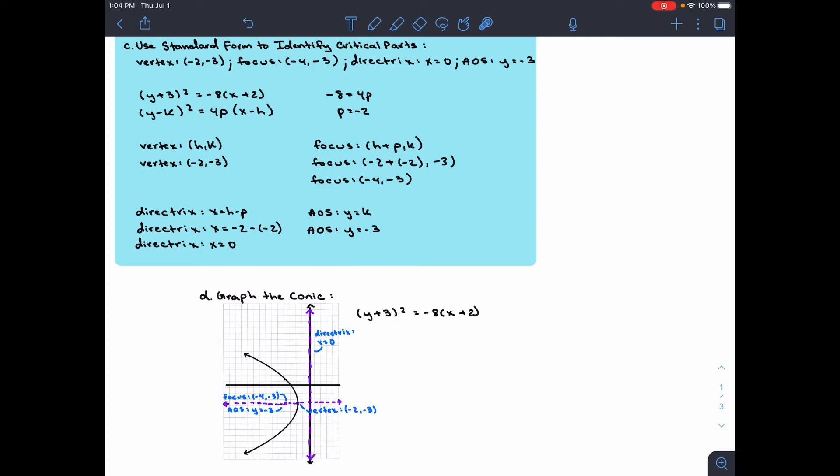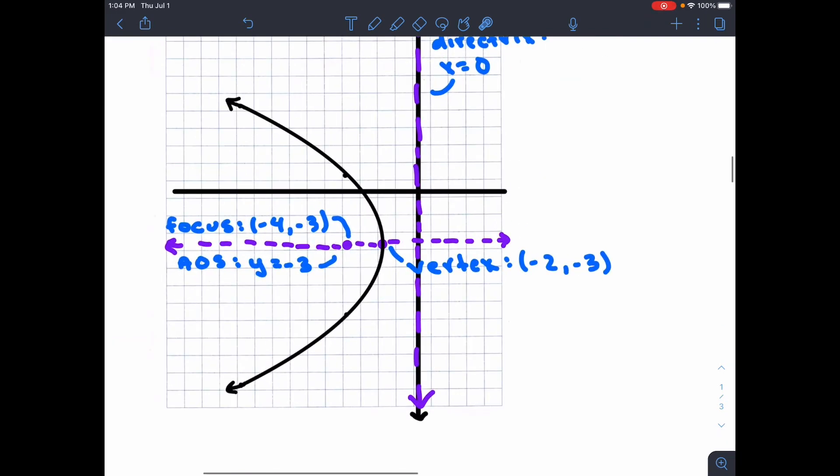We know h and k, so we put those values there. For p, we go back to this equation. We know that -8 = 4p, so p = -2. When we put this all into the equation, we get (-4, -3). We graph this point as well.